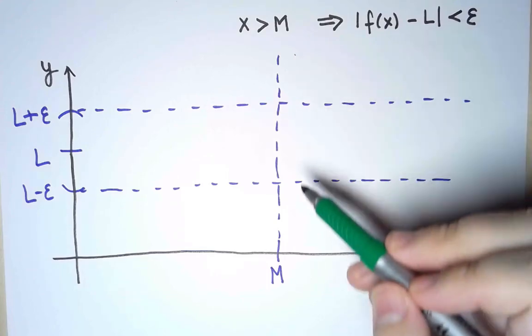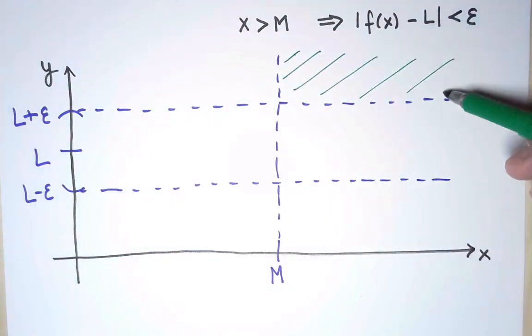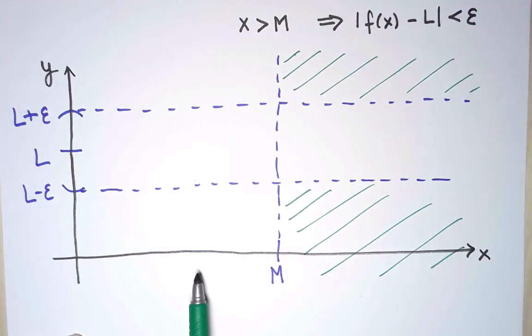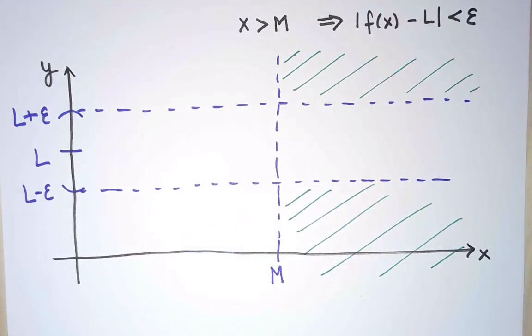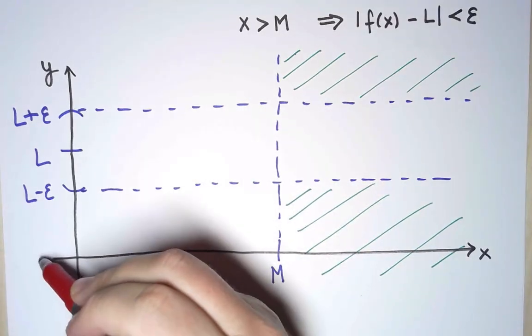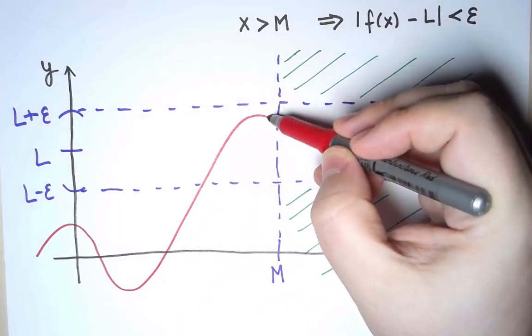In other words, these two regions are forbidden. But when x is smaller than M, the function could be anywhere. So, for example, for this value of M and this value of ε, this could be the graph of a function that satisfies that.